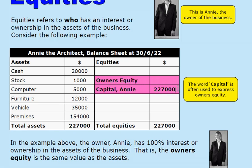Annie has 100% ownership in the assets of the business. We know that because her equity — the owner's equity — of $227,000 is the same value as the assets, $227,000. All of the equity, all of the ownership, all of the interest in the assets is held by the owner, Annie. The word capital is often used to express owner's equity. In this business, assets $227,000 equals equities $227,000, and that equity is 100% controlled by Annie, the owner. She has full ownership or interest in the assets of this particular business at this point in time.